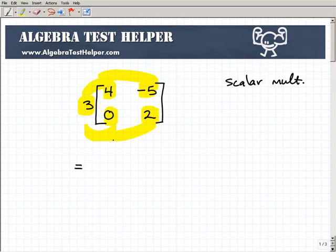So 3 times the matrix 4, negative 5, 0, 2 is going to be equal to 3 times 4 is 12. And then we have 3 times negative 5 is negative 15, 3 times 0 is 0, and 3 times 2 is 6.